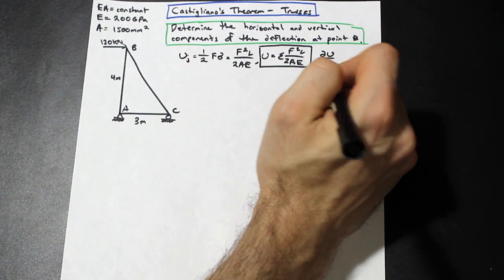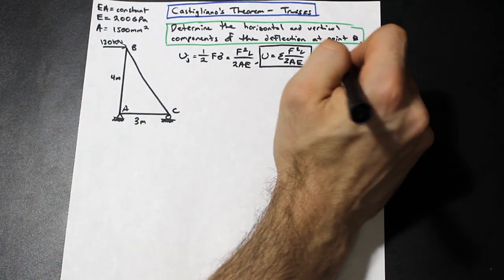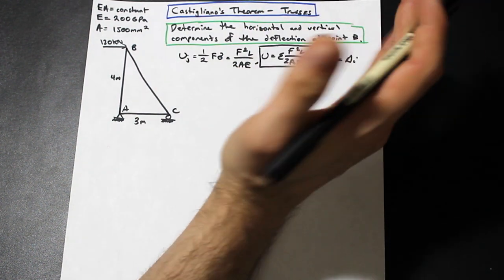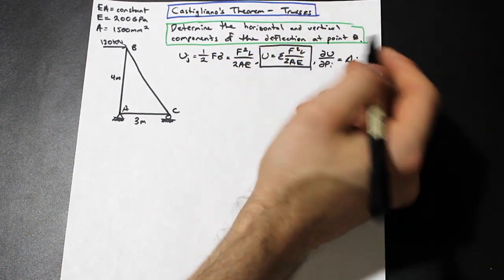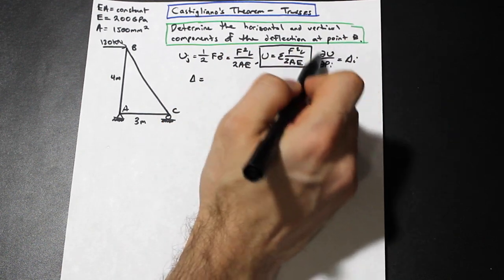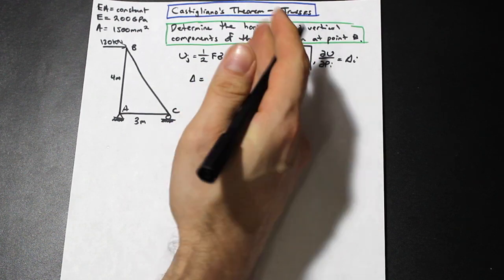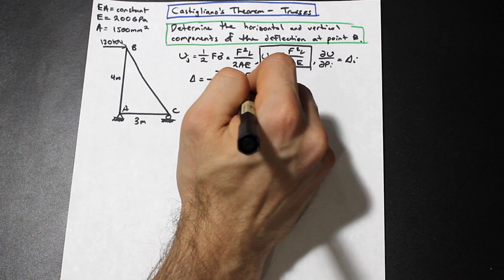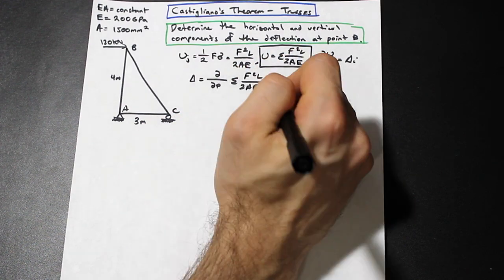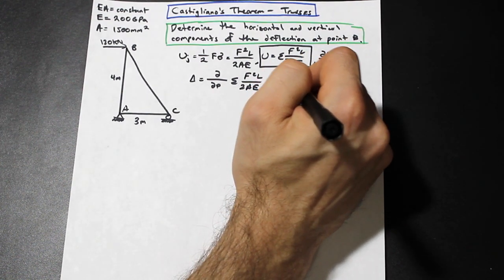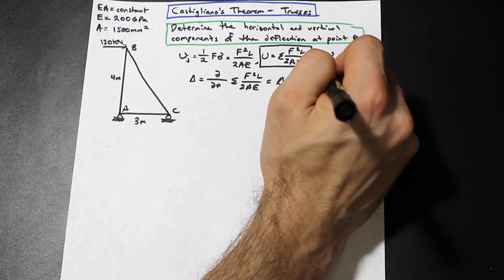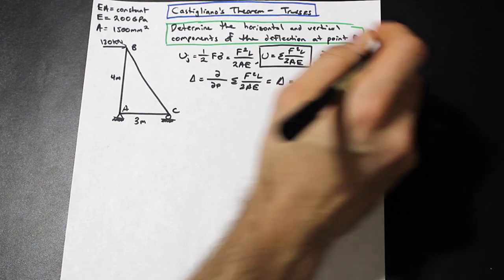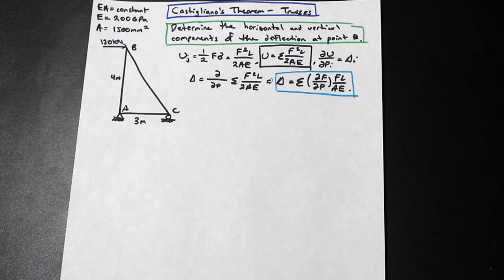The partial derivative of the strain energy U with respect to some load P is equal to the deflection in that direction. So how do we get the final Castigliano's Second Theorem formula for trusses? We take the partial derivative of the sum of F²L/2AE with respect to P — implicitly differentiating — and we get that the deflection is simply the sum of (∂F/∂P)(FL/AE). That is the formula we're going to use.